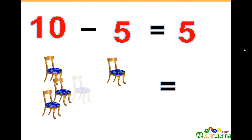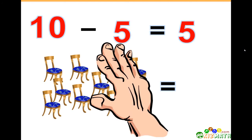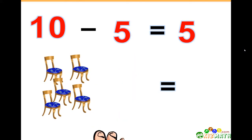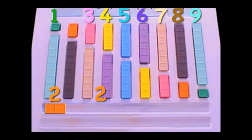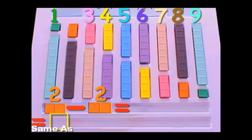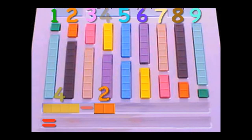10 minus 5 equals 5. We have 10 chairs, and if we take away five of those chairs, we only have five chairs. 2 minus 2 equals 0. 3 minus 2 equals 1. 4 minus 2 equals 2.